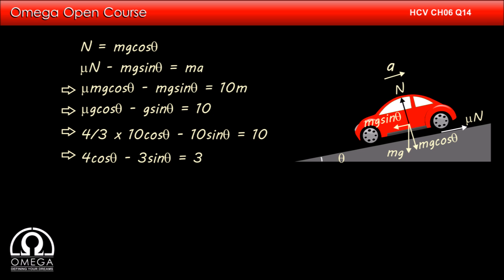Dividing both sides by 5, we get 4 by 5 into cos theta minus 3 by 5 into sin theta is equal to 3 by 5.